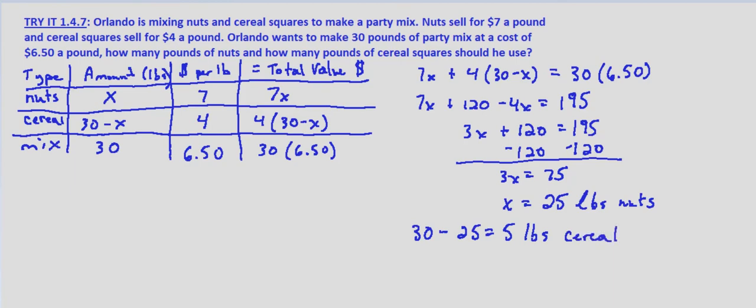Now how do we check this? Well, $7 per pound times, we plug it back into our equation up here. Other than we're looking at 4 times the number of pounds of cereal instead of 30 minus x, because it's 30 minus 25 is 5,